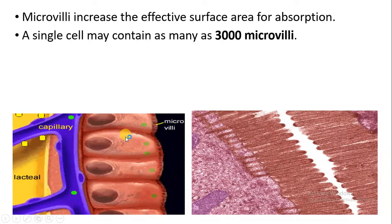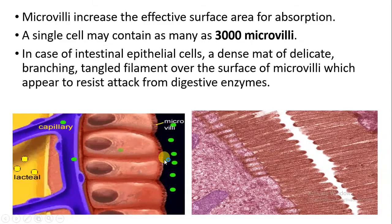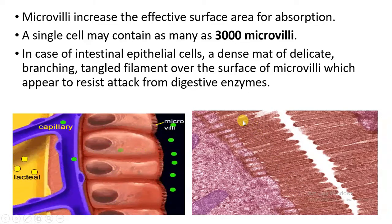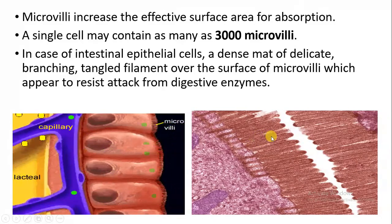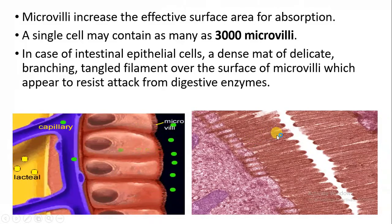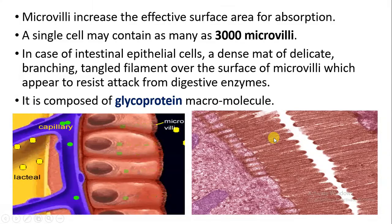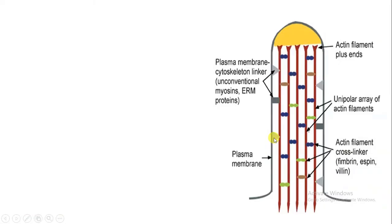A single cell may contain about 3000 microvilli on its surface. In intestinal epithelial cells, there is a dense mat of delicate, branching, tangled filaments over the surface of the microvilli. This helps to resist digestive enzymes, so the digestive enzymes are not able to affect the microvilli. These filaments are made up of glycoproteins.